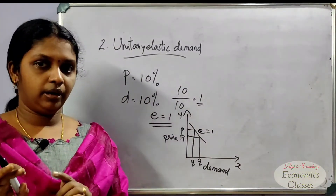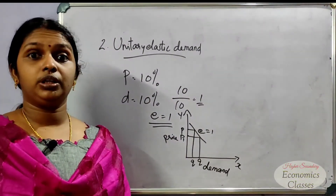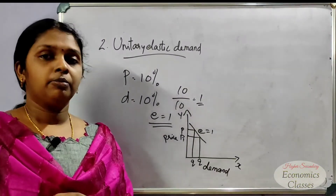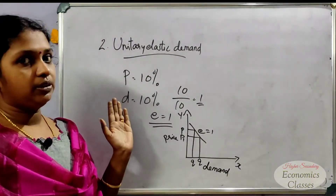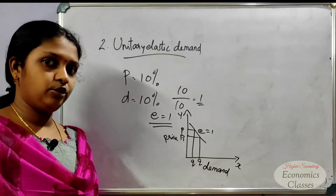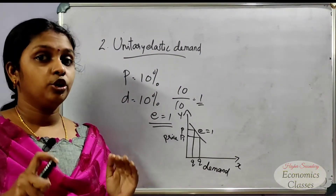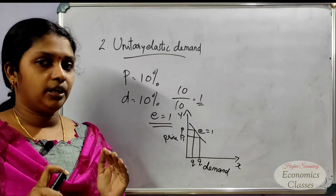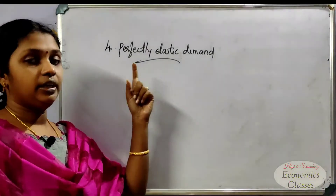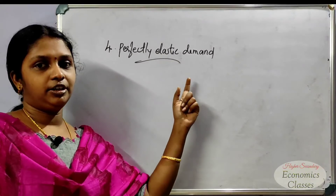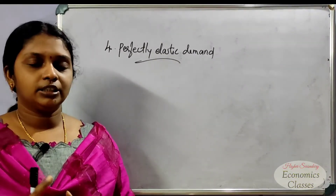For unitary elastic demand, the elasticity value equals 1. The fourth type is perfectly elastic demand, which is an imaginary concept.